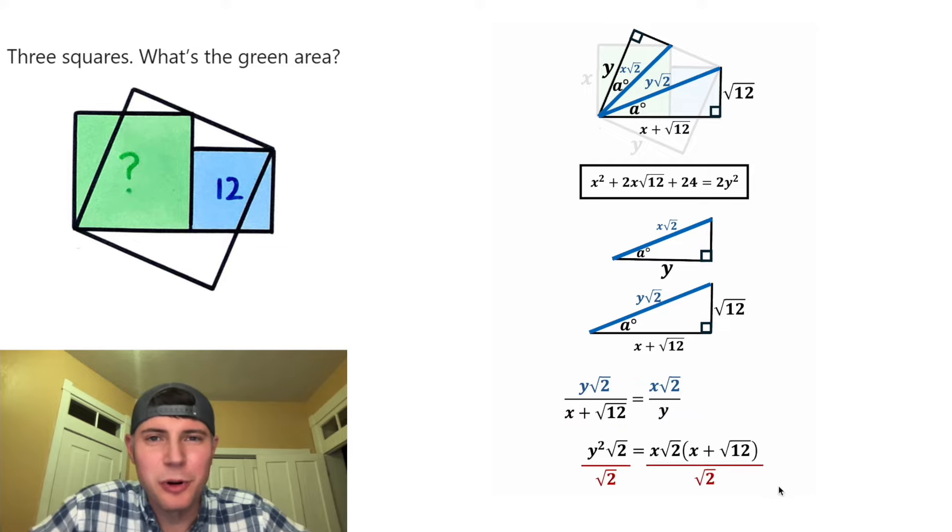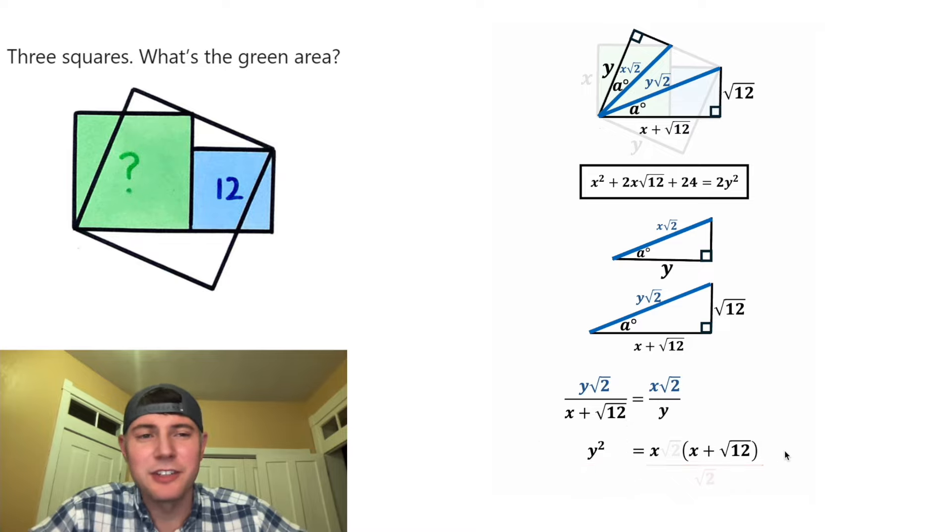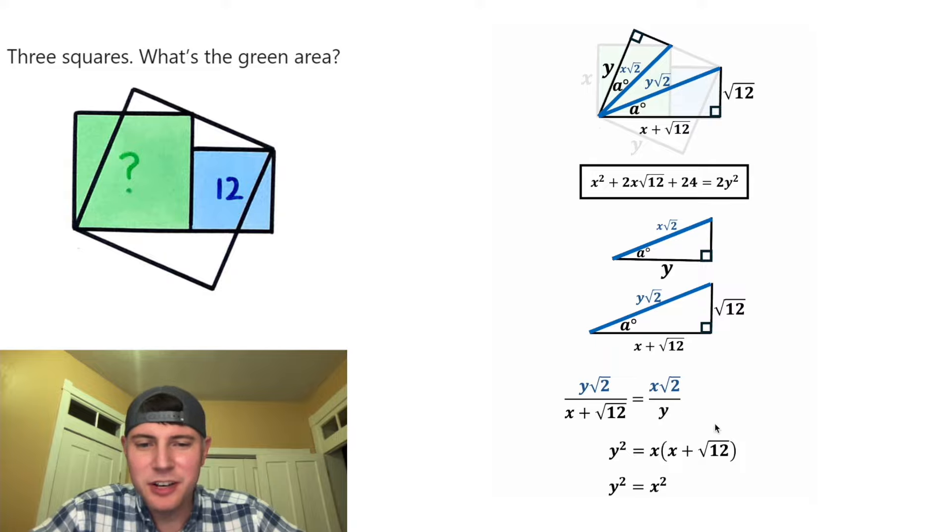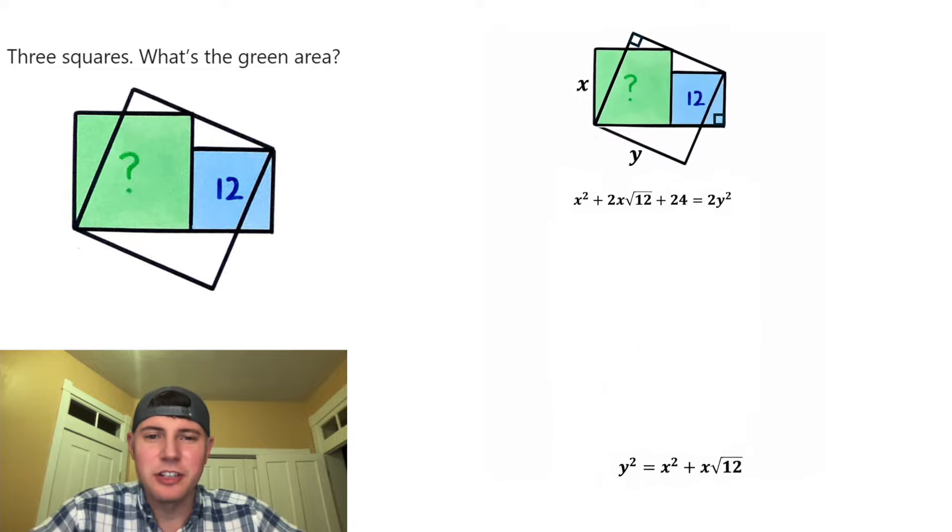To clean this up, let's divide both sides by square root of two. On the left-hand side, these will cancel each other out. And on the right-hand side, these will cancel each other out. So we're left with Y squared is equal to X times this. Let's distribute this X. X times X is equal to X squared, and X times root 12 is equal to X root 12. And I'm not sure what else to do with this, so let's bring it up here.